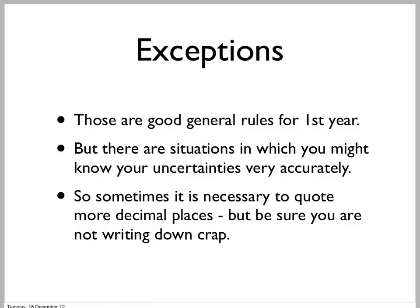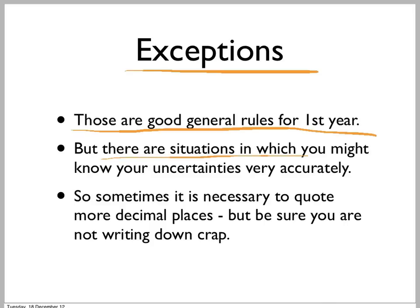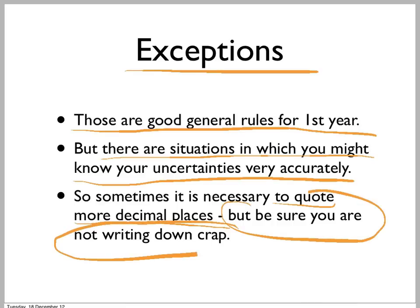We, as markers, get very annoyed when someone writes down 50 decimal places just because that's what your calculator gave you, even though the last 13 of them don't mean anything. These are good general rules for first year. However, be careful — there are exceptions. There are situations where you might know your uncertainty very accurately. In that case, you should quote it to more decimal places — however many you need so that they actually tell you something. The general rule still applies: make sure you're not writing down crap. Any number you put down should actually contain some information. Don't waste your reader's time by putting down numbers that don't mean anything because they're much smaller than the uncertainty.